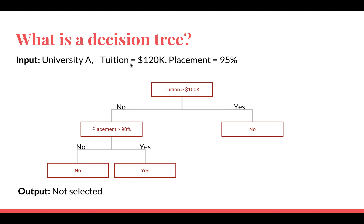For University A, the tuition fees are 120K and placement is 95%. The first question is whether tuition fee is more than 100K — the answer is yes because it is 120K. So in the flowchart, Ram goes in the 'yes' direction, which says this university cannot be selected because tuition fee is more than 100K and Ram cannot pay more than 100K. He doesn't even reach the second part of the decision tree because the university fails at the very first question, and the output is 'not selected.'